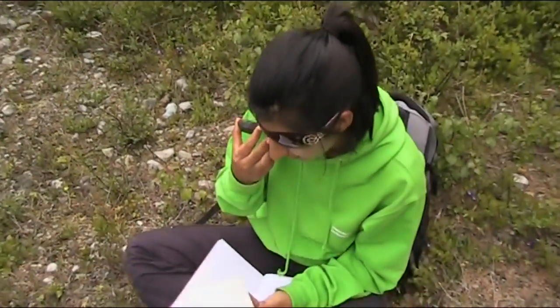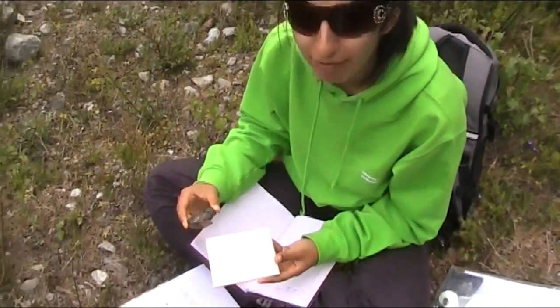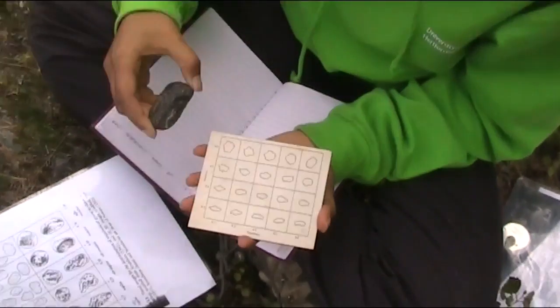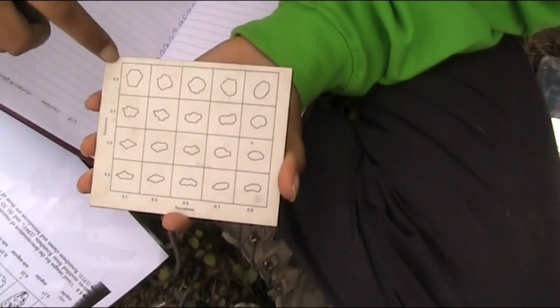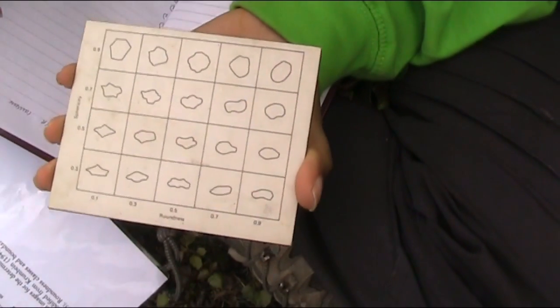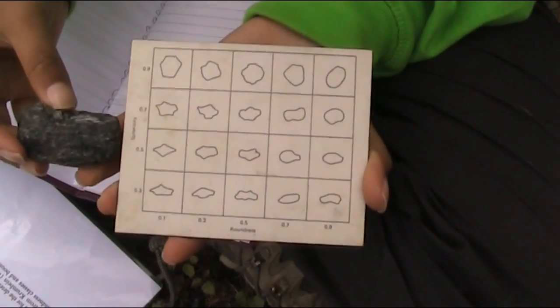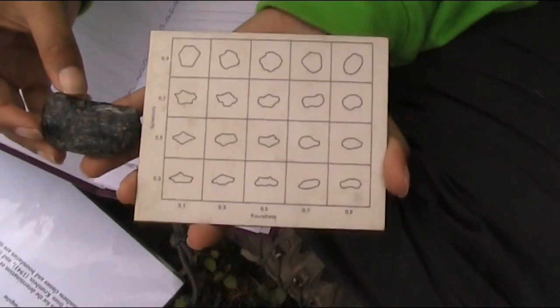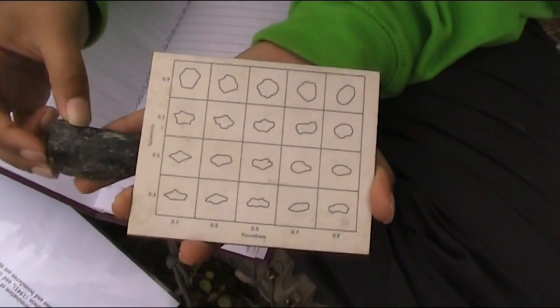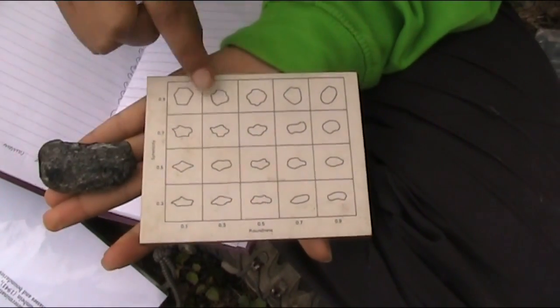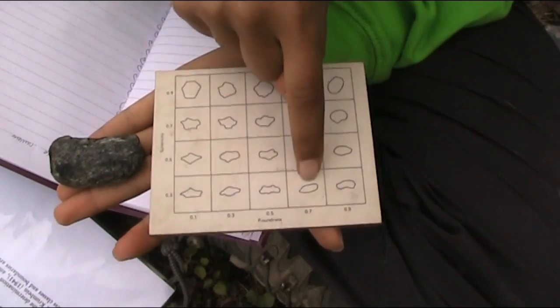The next step will be to classify the severity and the roundness of the pebble. You've got the severity going on the y-axis and going along the x-axis you have the roundness. So you've got to look, what sort of picture does that rock look like or pebble? I'd say that looks more like, I think we'll say about that one.